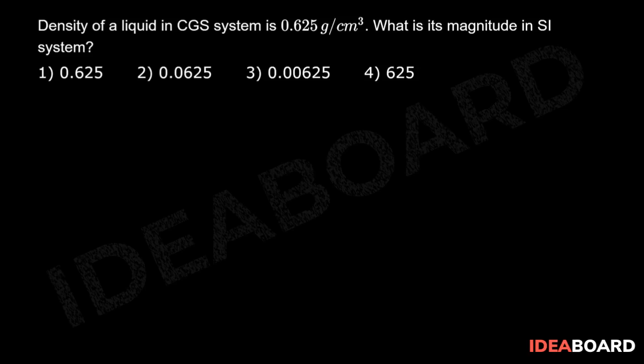Now, any measurement of a physical quantity magnitude is inversely proportional to its units. So I can write N1 U1 should be equal to N2 U2.